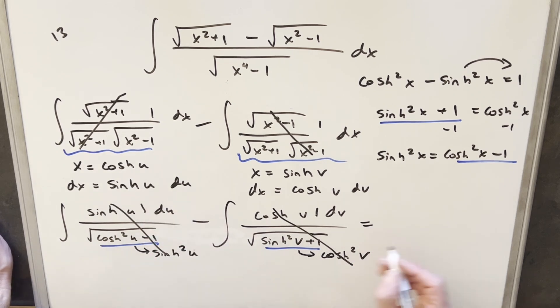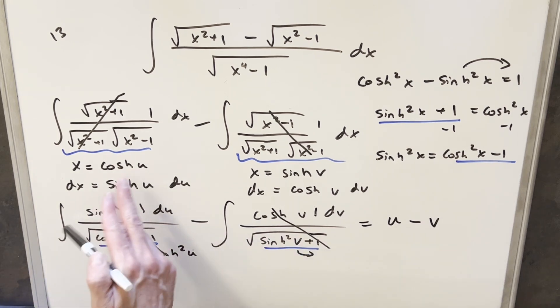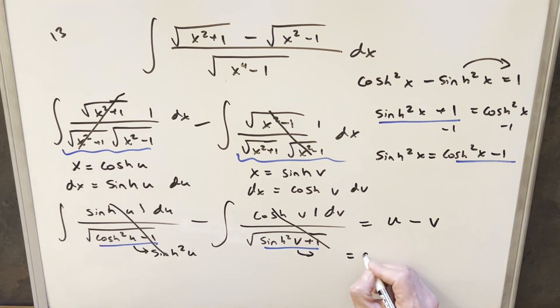So when we integrate here, we integrate one, we just get u. And we integrate here, we get v. But for our values of u and v, we have this in our definition. So we said x equals cosh of u. So then u is going to be inverse cosh of x. And then for our v, same thing, this is going to become inverse sinh of x. And so we'll just put a plus c on there, and that's it.